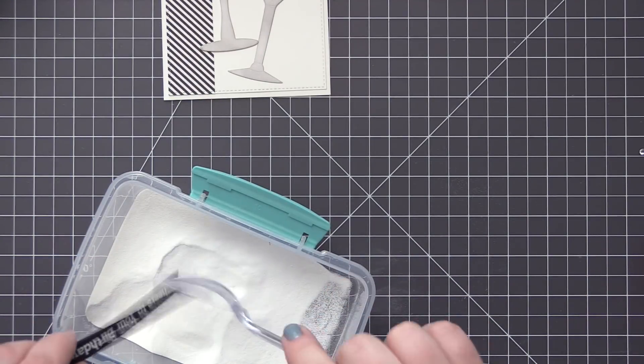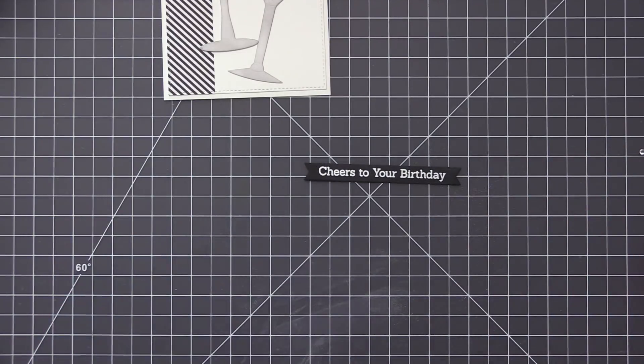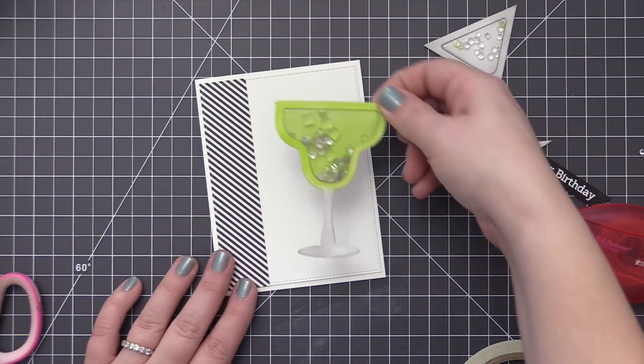So I'm just adding that embossing powder onto my stamping and I'm just going to take it to my heat gun and heat set that. And now you can see we have this really bright white sentiment on that black cardstock strip.